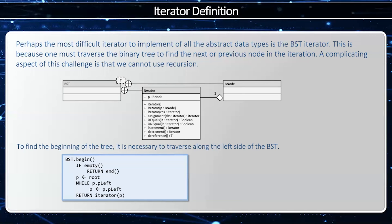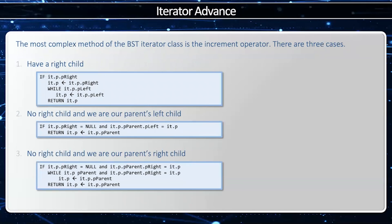One of the common things we want to do with the BST is find the first node in the collection. We do this through begin. To do that, we keep traveling down the left side of the binary tree from the root all the way until we no longer have a left node. That leftmost node is the first node in the collection.